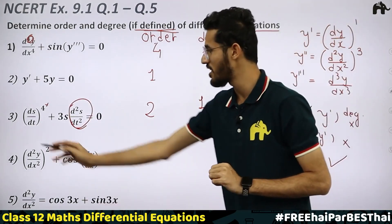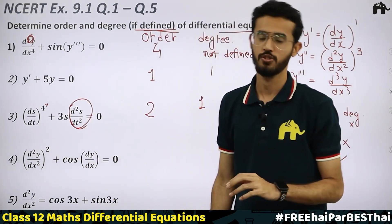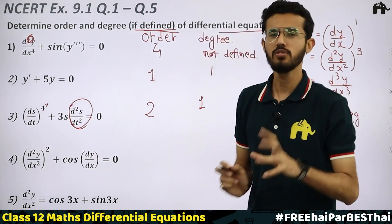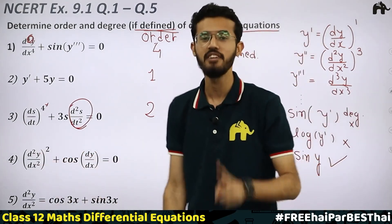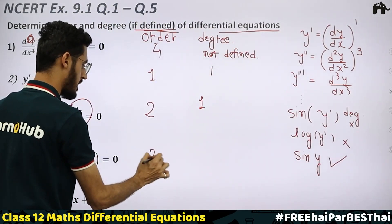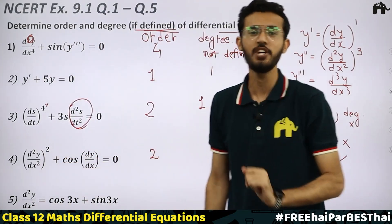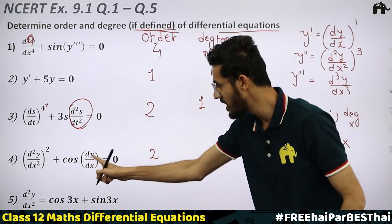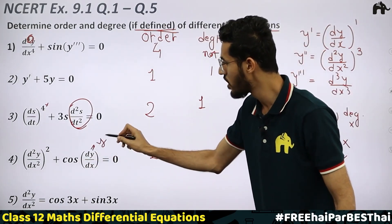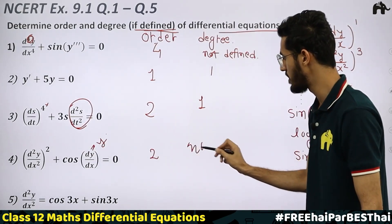Similarly, in question 4: d²y/dx² has power 2, and here we have cos(dy/dx). First, the order — the highest order derivative is 2, so the order is 2. But for degree: dy/dx, i.e., y-dash, is appearing inside the cosine function, so the degree is not defined.